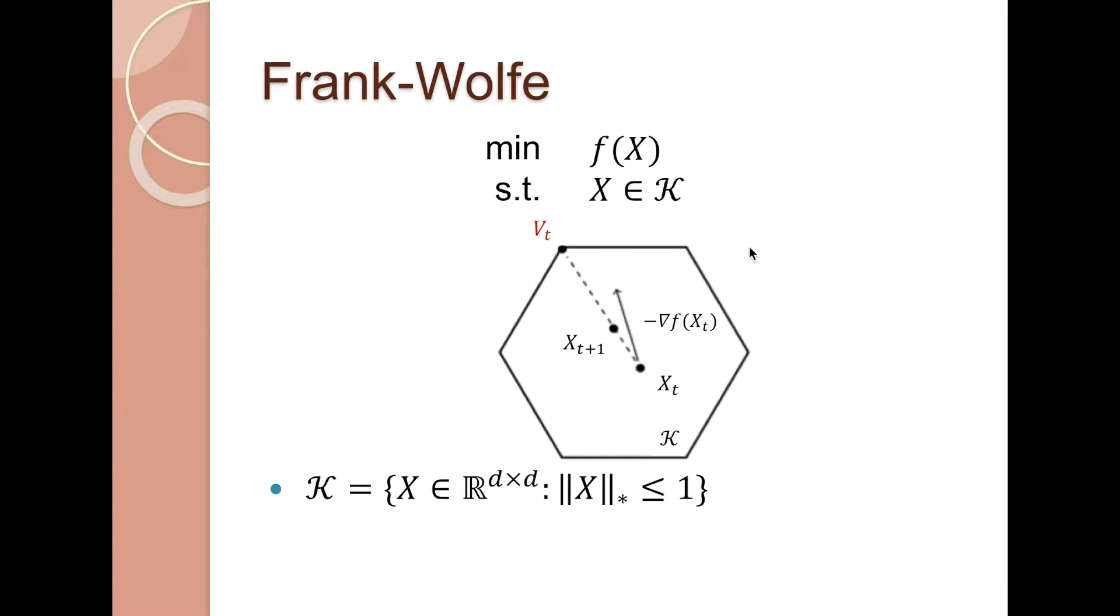For the trace norm ball constraint, the linear optimization step amounts to computing the top singular vector of a matrix. We call this 1-SVD. This can be done much more efficiently than a full SVD. Frank-Wolfe has much lower per iteration running time.